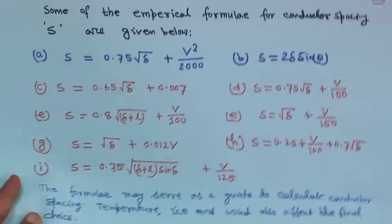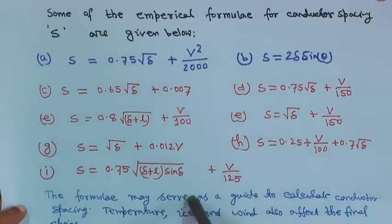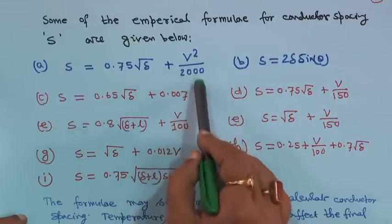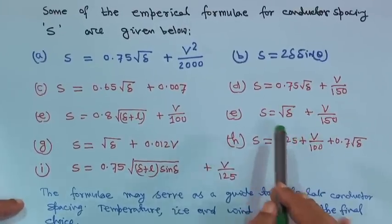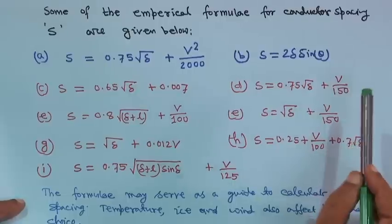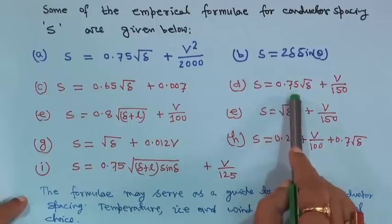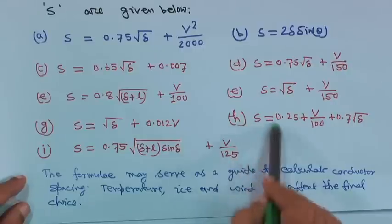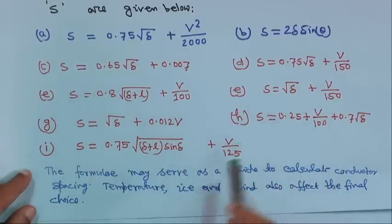There is no direct formula for conductor spacing, but some empirical formulas are given. One is S equal to 0.75√δ plus V²/2000. Another is S equal to 2δ sin θ. Another is S equal to 0.65√δ plus 0.007δ plus V/150. These empirical formulas serve as a guide to calculate conductor spacing. Temperature, ice, and wind also affect the final choice.